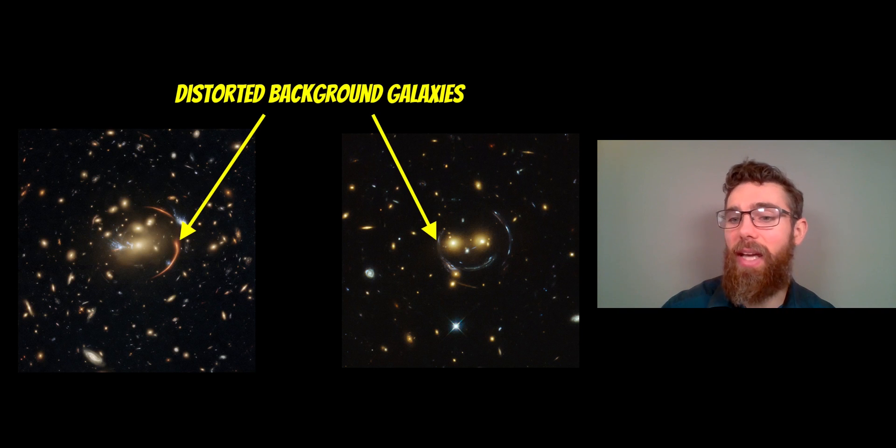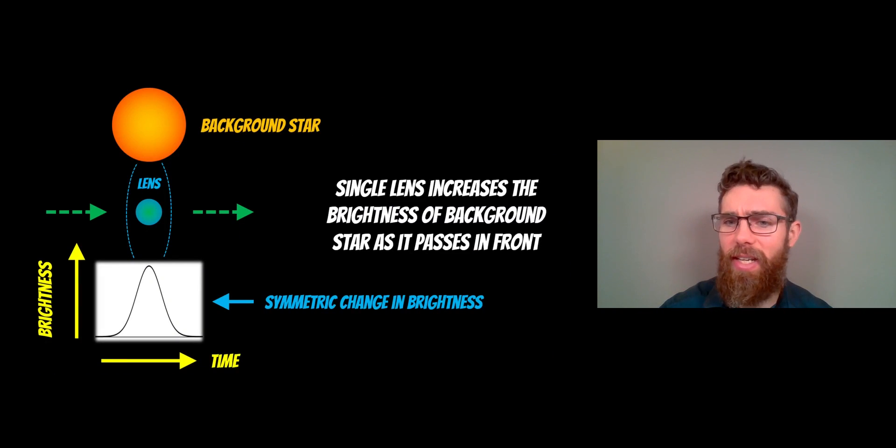But microlensing is basically a smaller version of that. It's on a much smaller scale, and it's not as obvious. In this case here, instead of having a galaxy cluster acting as a lens, you've got a smaller object acting as a lens between us and some background star. If we watch a background star, a gravitational lens will pass in front and the background star is magnified, so it becomes brighter. Now if it's a single lens, let's say it's another star, as it passes in front, the light is bent around. It acts as a lens, it's magnified, it becomes brighter. You get a nice symmetric change in brightness and magnification as that lens passes in front.